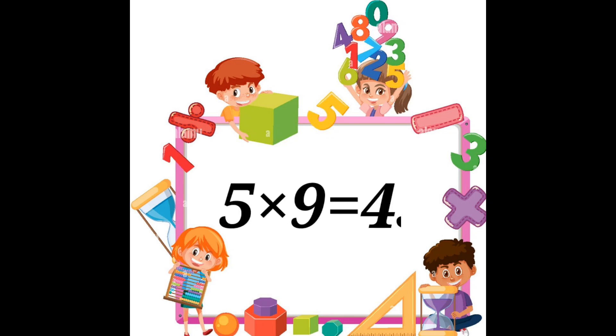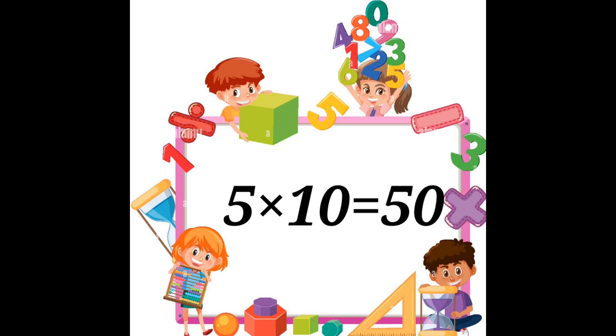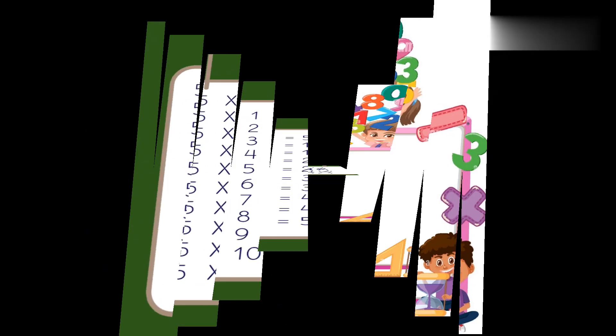Five nines are forty-five. Five nines are forty-five. And five tens are fifty. And five tens are fifty. Now repeat it again with me.